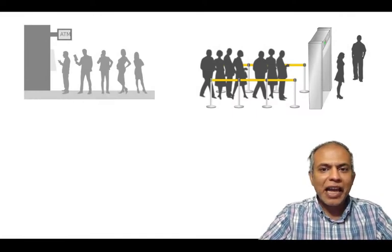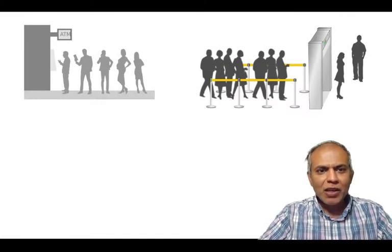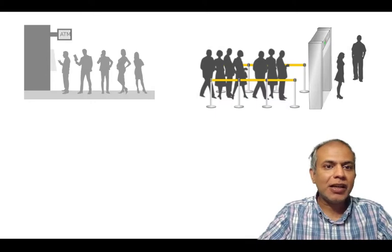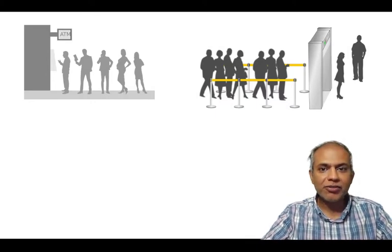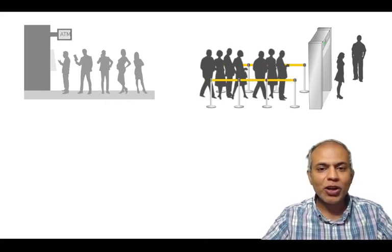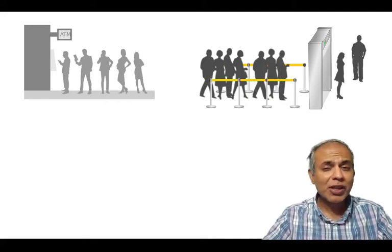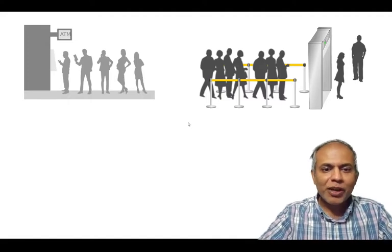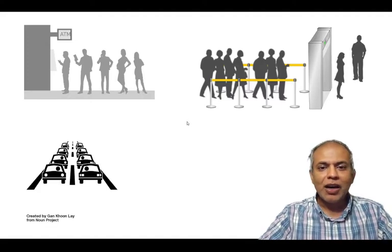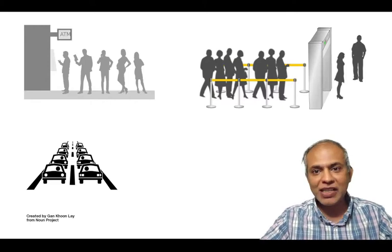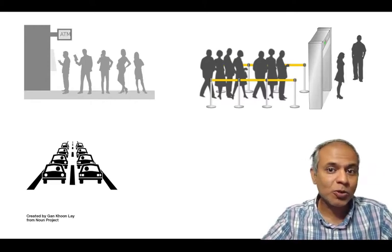Waiting lines are everywhere. The typical waiting lines or queues that we see are people waiting in front of an ATM, customers or passengers waiting before security. Those are typical queues of people. But there are many different types of queues — for example, a traffic jam is a form of a queue where we have cars waiting to pass through a road.